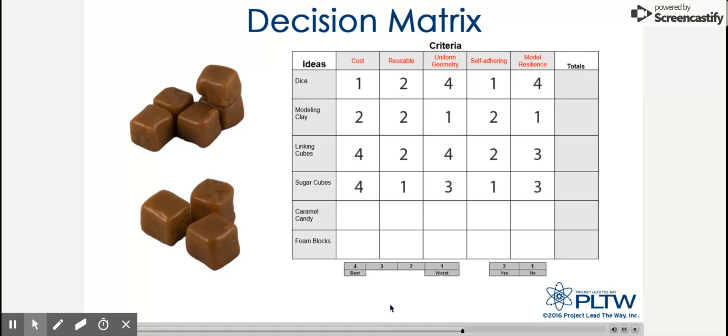Caramel candies are fairly inexpensive, so we'll give that a 3. They're not reusable. A 1 goes there. Cubes are not uniform. That's a 2. They are kind of self-adhering, but not really, so that's a 2 as well. And they're not very resilient. A 1 goes there.